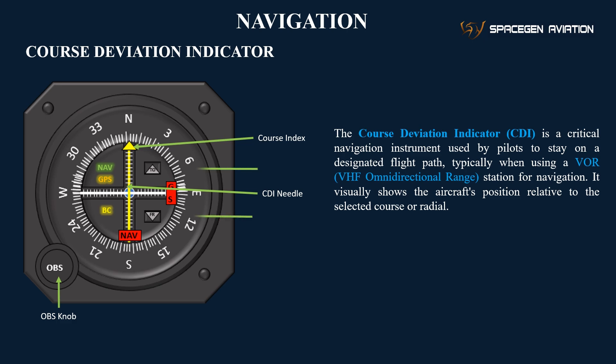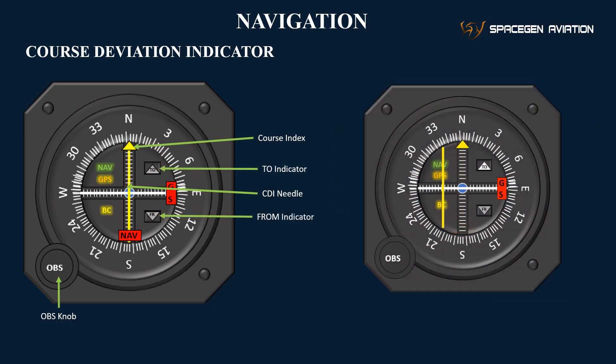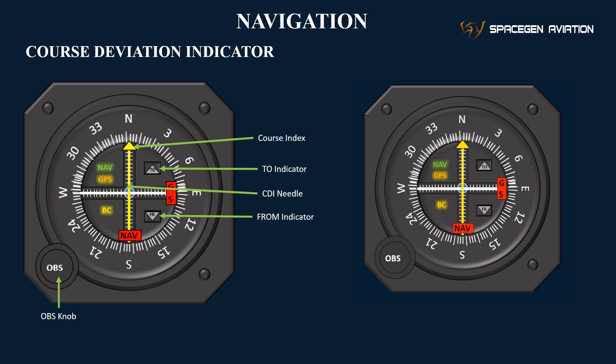The to and from indicators show whether the selected course leads toward or away from the VOR station, with 'to' indicating the station is ahead and 'from' meaning it is behind.